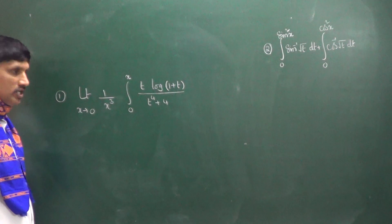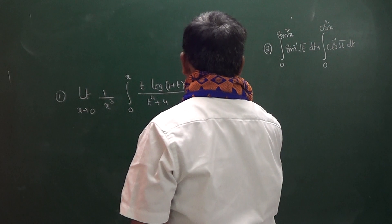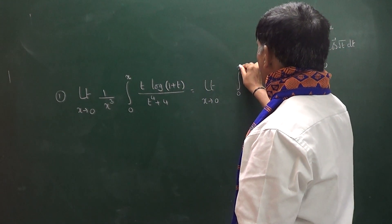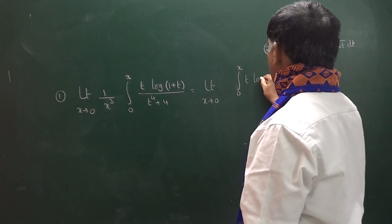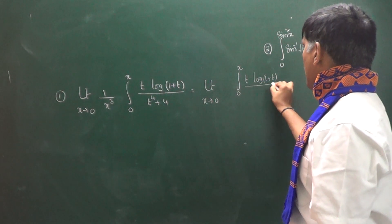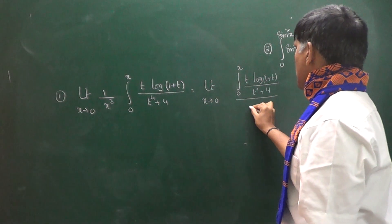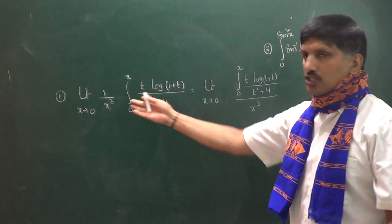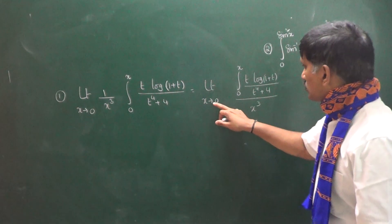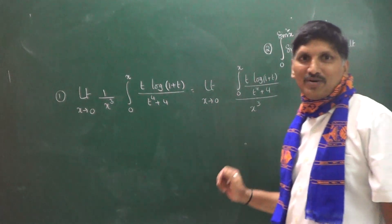This is the particular question: limit as x tends to 0 of the integral from 0 to x of [t · ln(1 + t) / (t⁴ + 4)] divided by x³. If you substitute the upper limit, the numerator becomes 0 and the denominator also becomes 0.